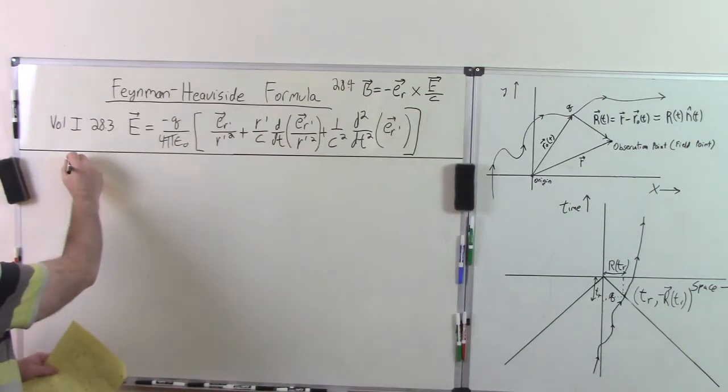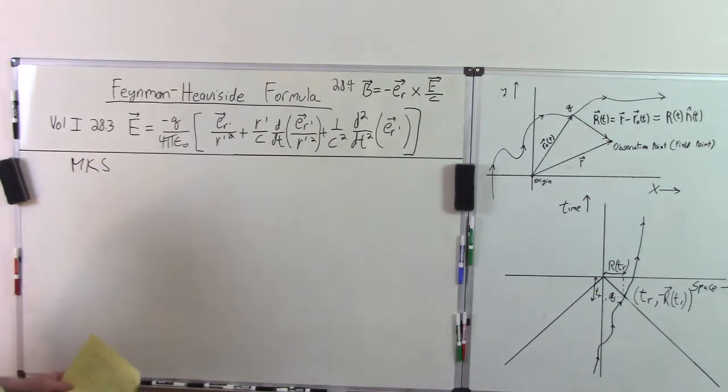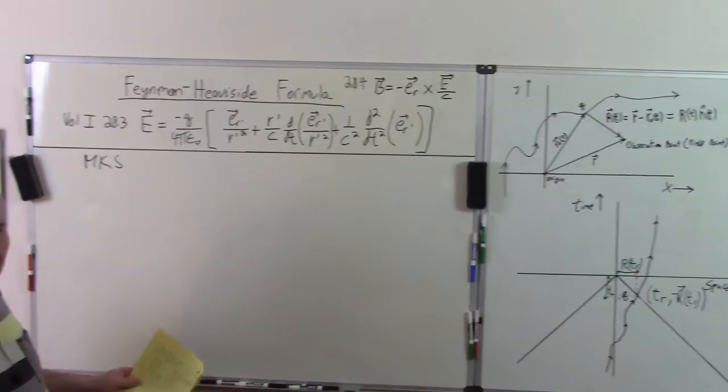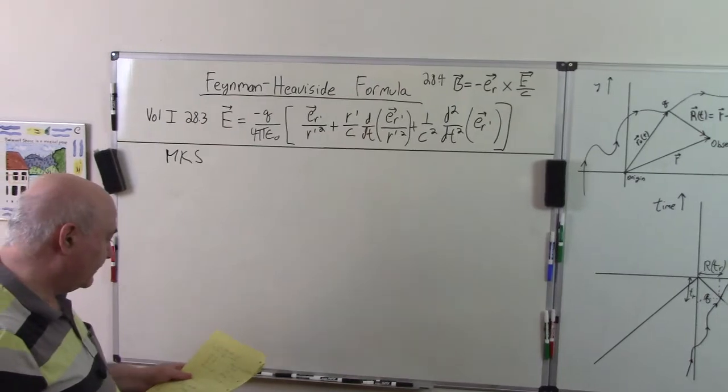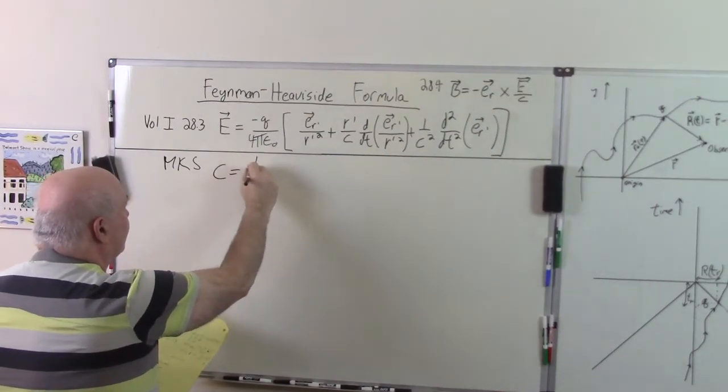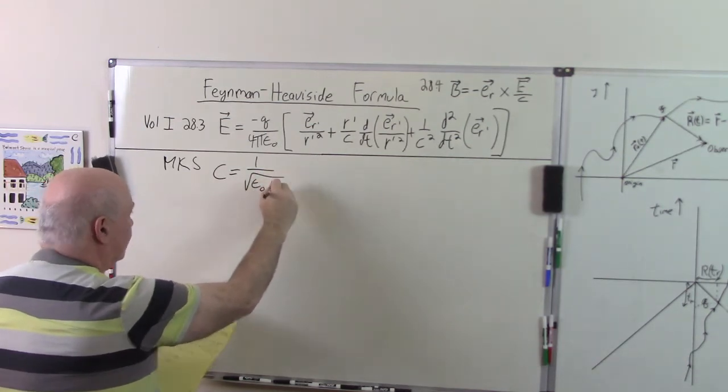First of all, against my better judgment because the book by Zangwill is written in MKS units, I'm going to use MKS units for this video, which goes against my general preconceptions for a theoretical physicist to always use CGS or natural units. So just to set the stage, C is 1 over the square root epsilon_0 mu_0.